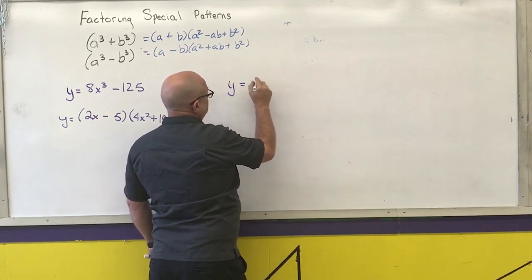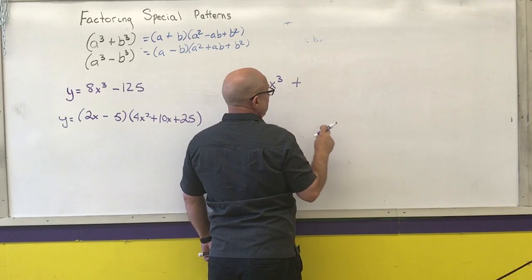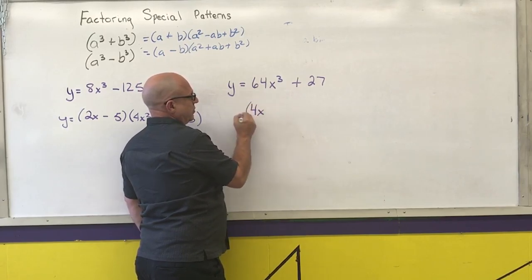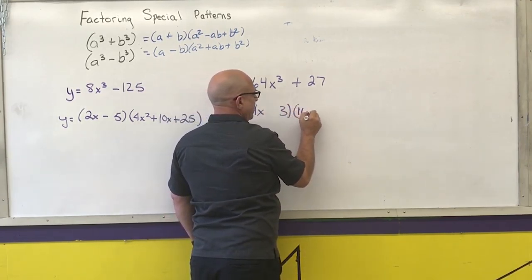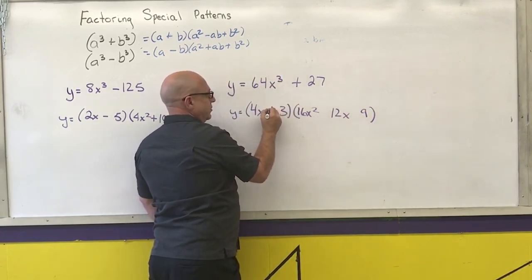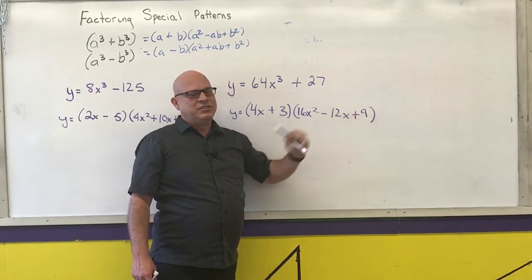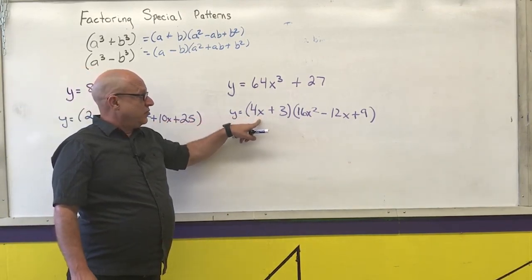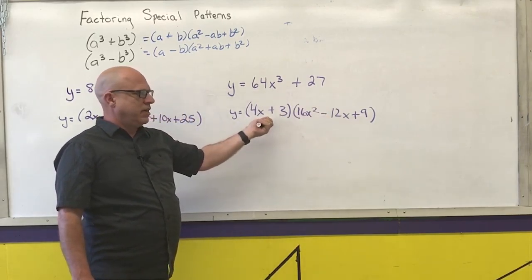Next example: y equals 64x cubed plus 27. Cube root of the first is 4x (that's a memorized cube). Cube root of the last is 3. (4x) squared is 16x squared. 3 times 4x is 12x. 3 squared is 9. Copy the sign, change it, always positive: (4x + 3)(16x² − 12x + 9). Again, the first and last of the trinomial are perfect squares, but the middle is 1 times the product, not 2 times the product — that's how the sum of cubes pattern works. The solution to the binomial is negative three-fourths; the trinomial has no real solutions. So this equation never crosses the x-axis except at negative three-fourths.